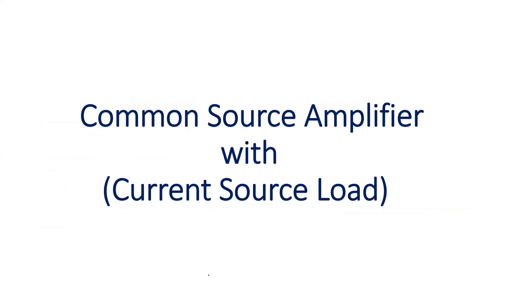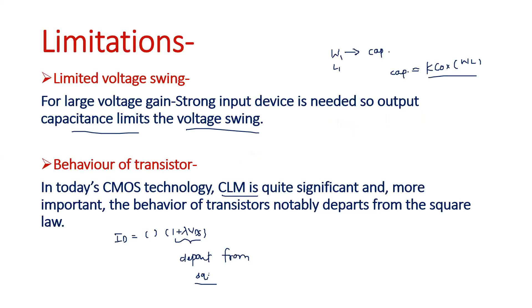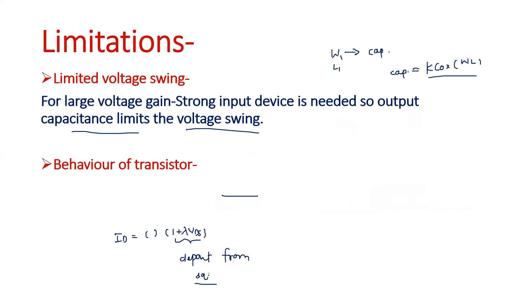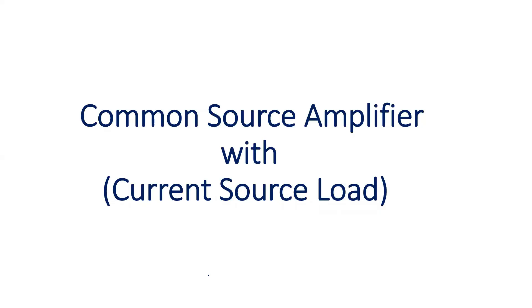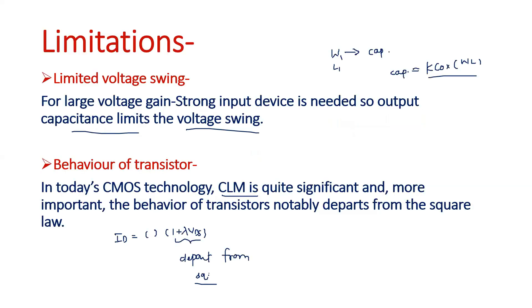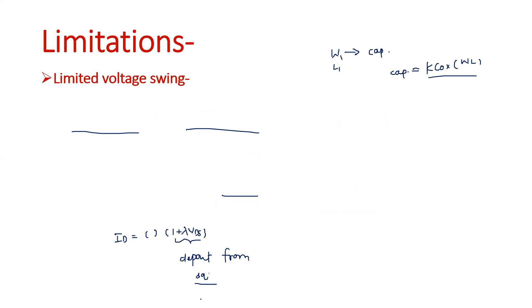So these are the limitations of diode connected load. In the next video, I am going to discuss about the Common Source Amplifier with Current Source Load. Previously I discussed all videos related to Common Source Amplifier with Resistive Load, and in this video I discussed about the Common Source Amplifier with Diode Connected Load. Next video will cover current source load. Thank you.